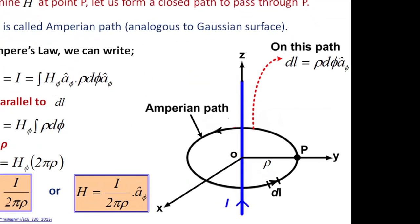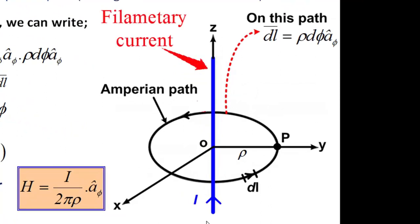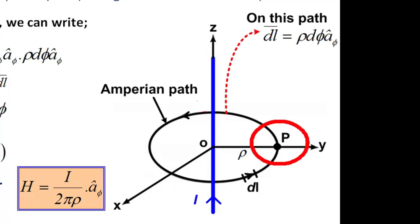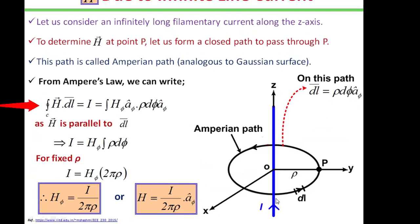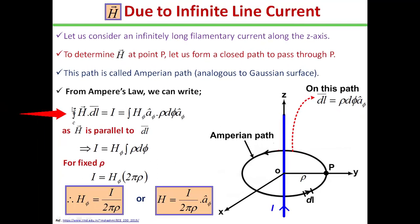So let's start. Look at this figure. Consider an infinitely long filamentary current along the z-axis in the blue color. To determine H at an observation point P, let us form a closed path that passes through the point P. This path on which Ampere's Law is to be applied is known as Amperian path, and this is analogous to the Gaussian surface in electrostatics. Since this path encloses the whole current I, from Ampere's Law we can write as line integral H·dl over c is equal to I.